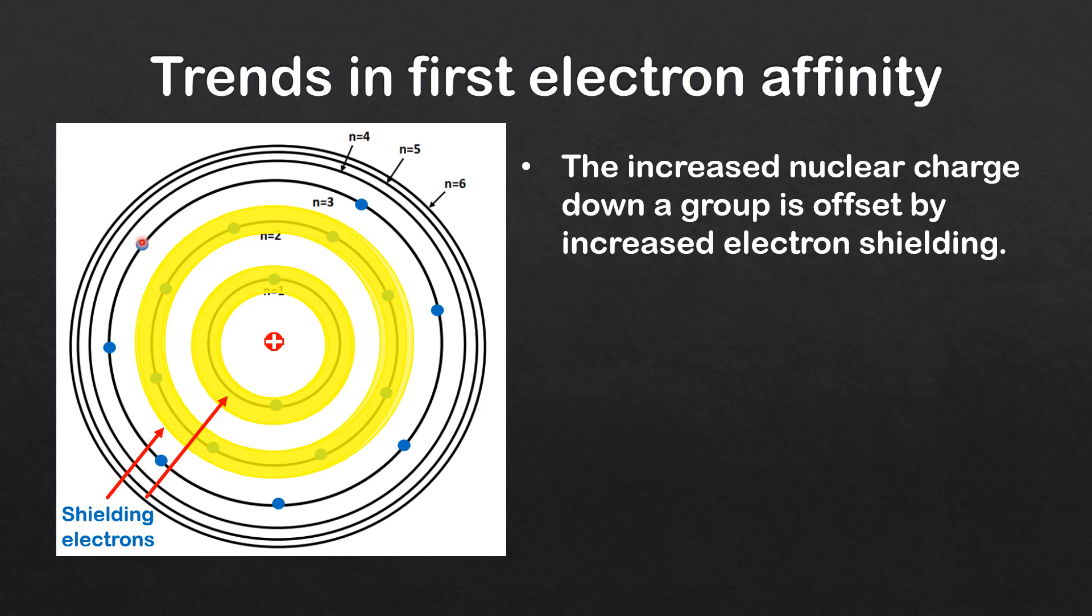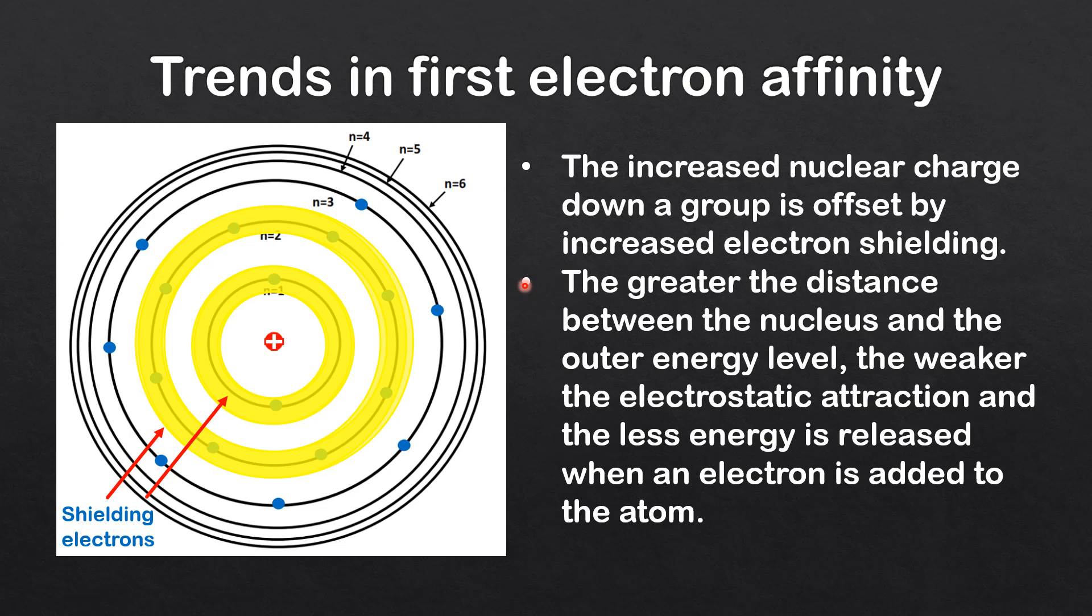And the second reason for the decrease in electron affinity down a group: the greater the distance between the nucleus and the outer energy level, the weaker the electrostatic attraction and the less energy is released when an electron is added to the atom.